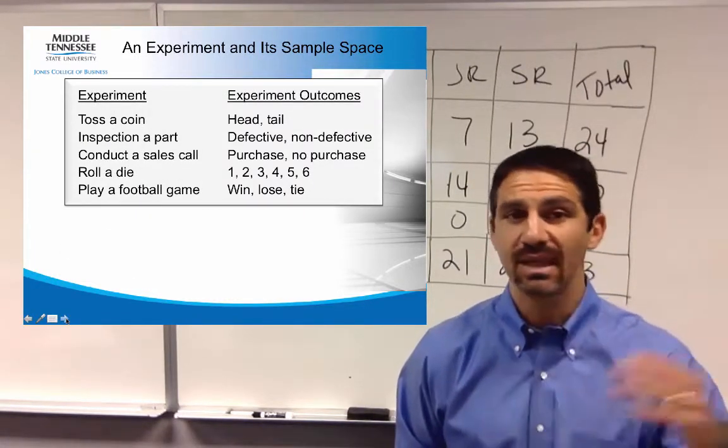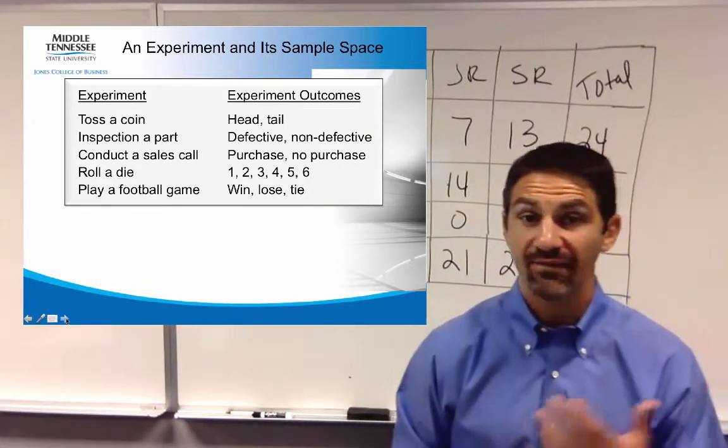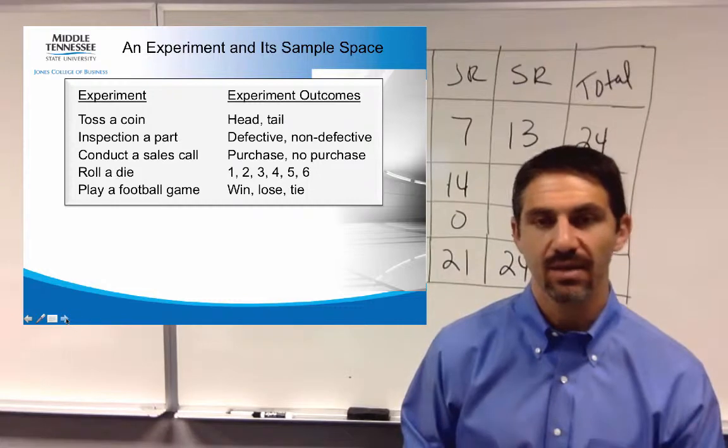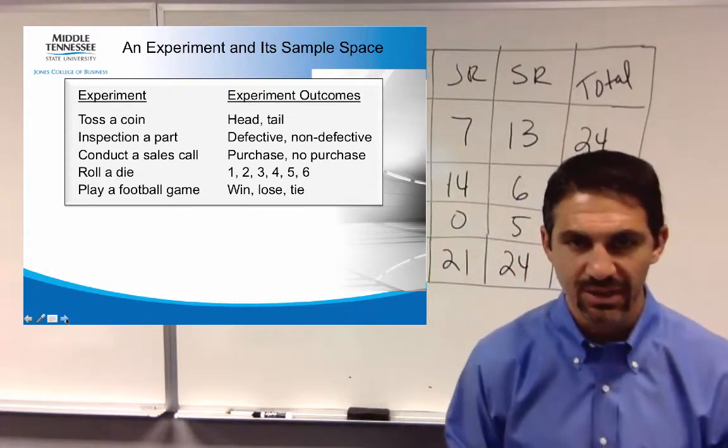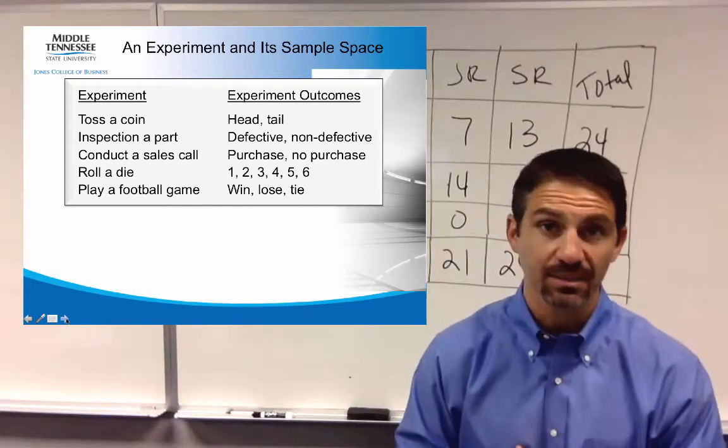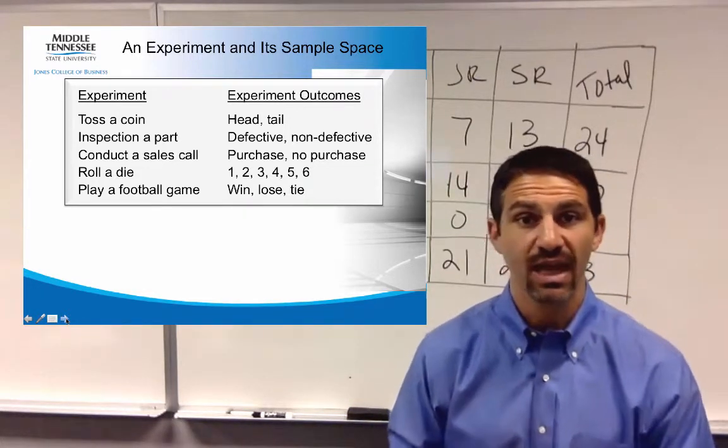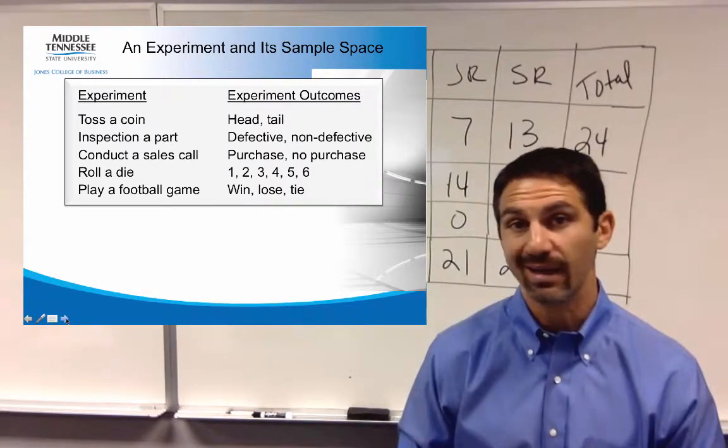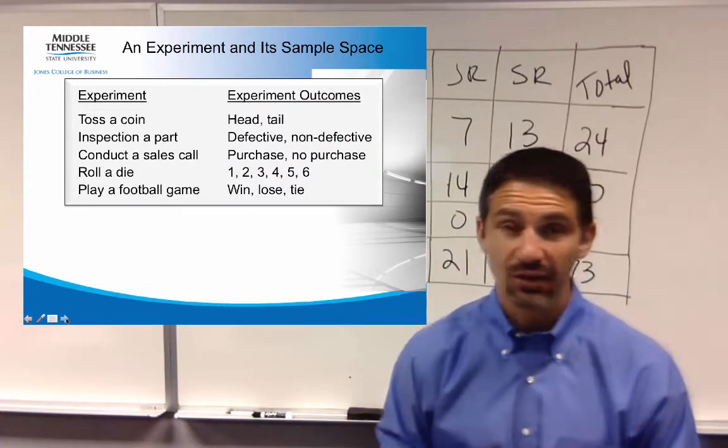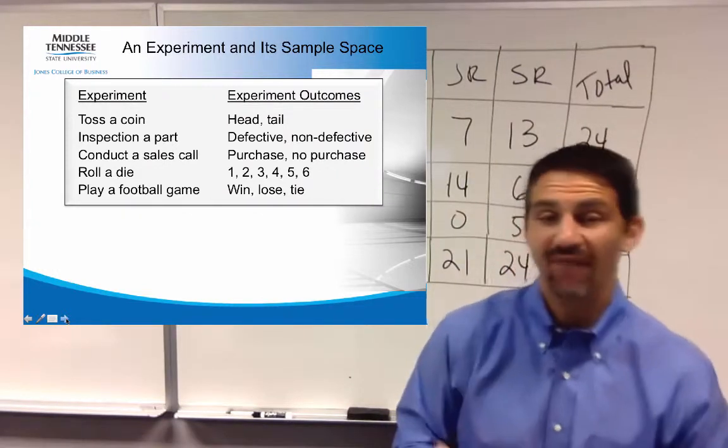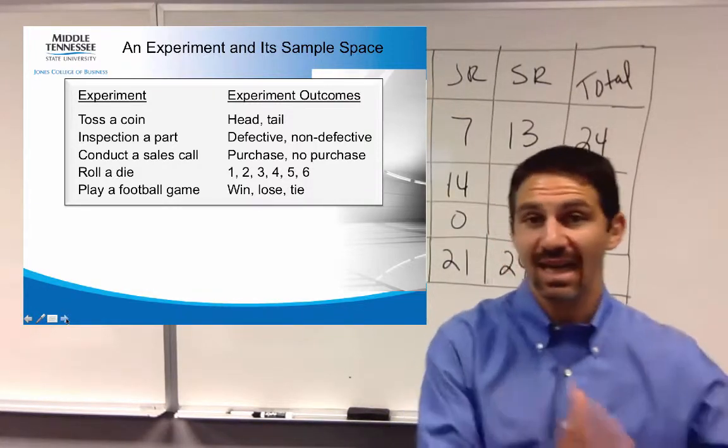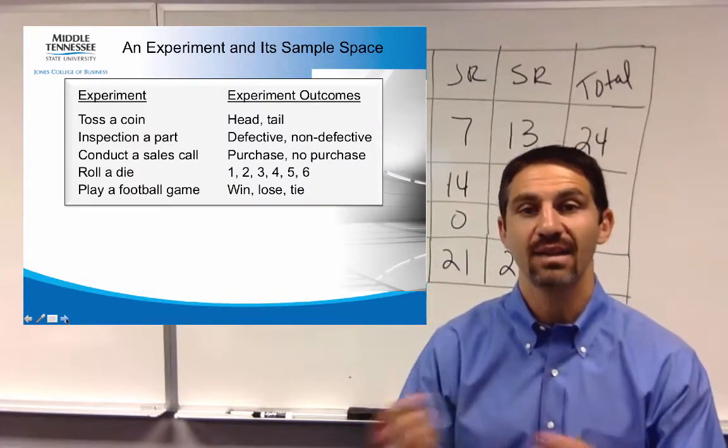So when we look at an experiment, again, toss a coin, the outcomes would be then heads or tails. If I inspect a part on the production line, it's either defective or not. A sales call either can be a purchase or not be a purchase, and I want you to really think about that sales call one. The probability, if you just think of the fact that there's two possible outcomes, it says that there's a 50% chance of the sales call being successful, because it's one out of two. But we know better than that, because if a person makes a phone call, let's say they call 100 individuals, it's more likely to be around 10 or 5 people that are willing to purchase over the phone. So the probability then is different based on history than it is just on the possible outcomes.